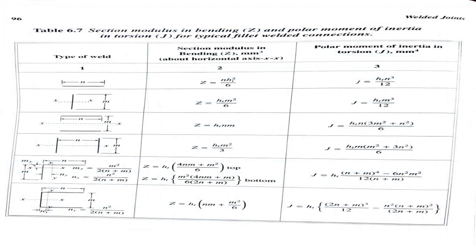Now we have to look at the type of weld alignment and the corresponding values from the table.